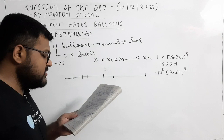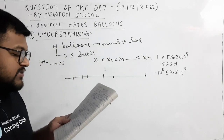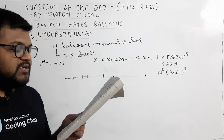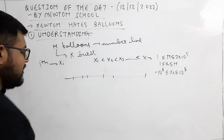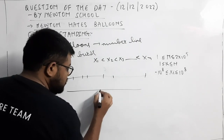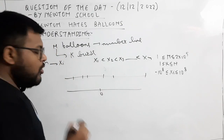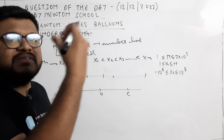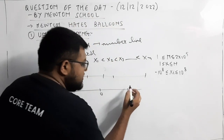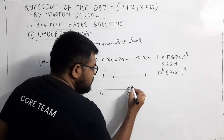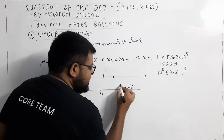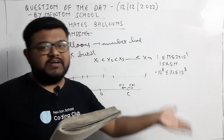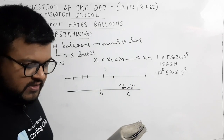Initially Newton is at coordinate 0. In a single second he can move from coordinate C to either C-1 or C+1. कि initially Newton जो है, वो coordinate 0 पे है, और एक second में, अगर मान लो वो किसी coordinate C पे है at some time T, तो वो या तो C-1 पे move हो सकता है, या C+1 पे move हो सकता है, मतलब कि एक second में, या तो एक step right hand side, या एक step left hand side move हो सकता है।